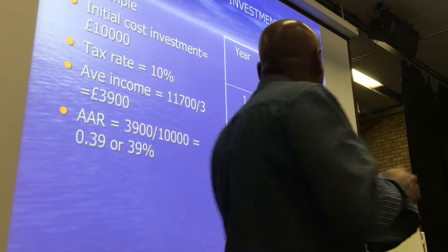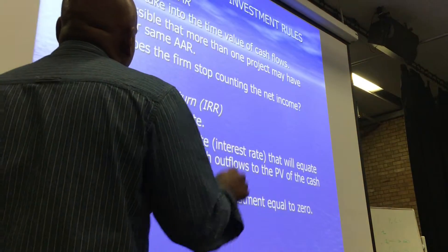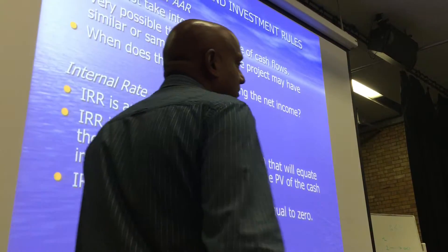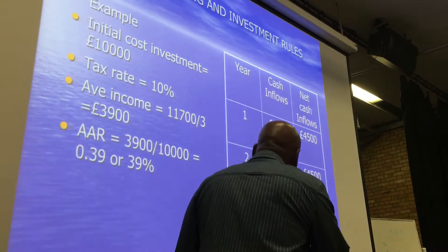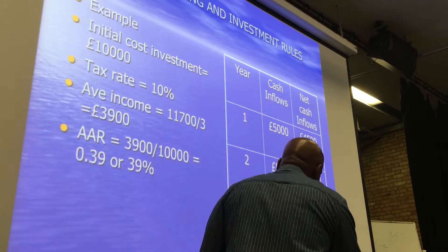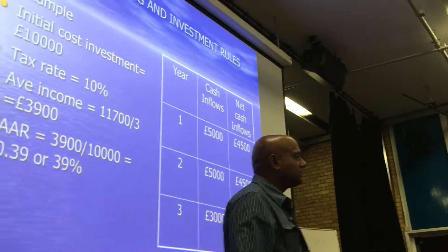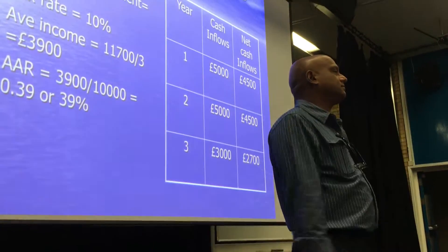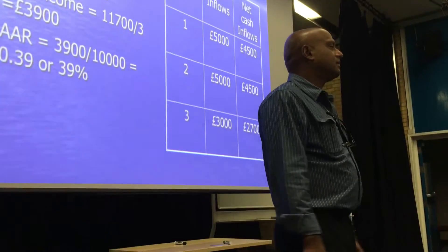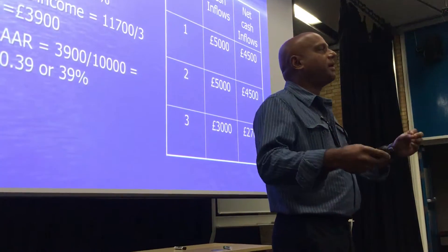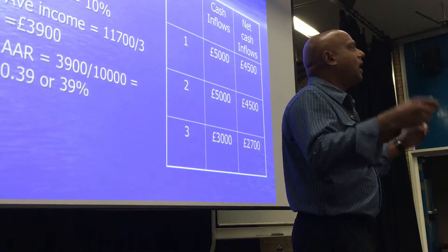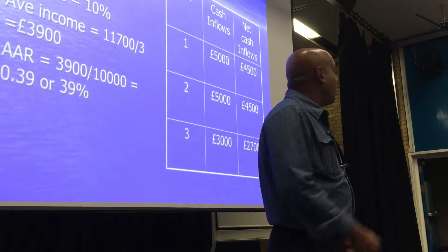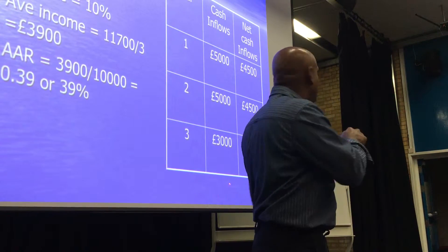But the biggest problem here is: when does the firm stop counting the net income? When do you stop counting — at year four, five, six, seven, eight, nine? Just like payback period — when do you stop counting? With discounted payback period or payback period, when do you stop saying I want the money back in two years or three years? When do you stop counting?